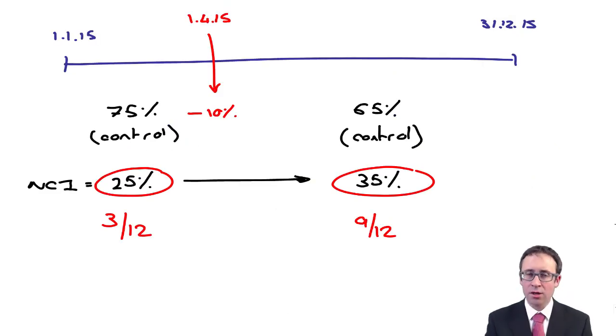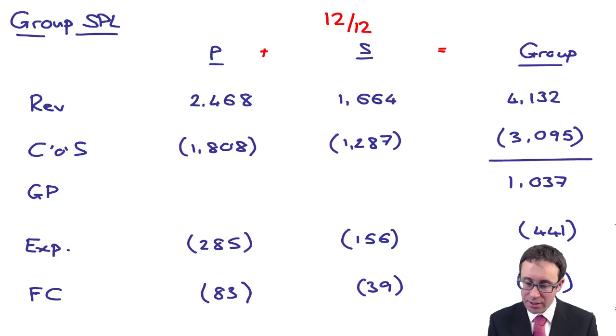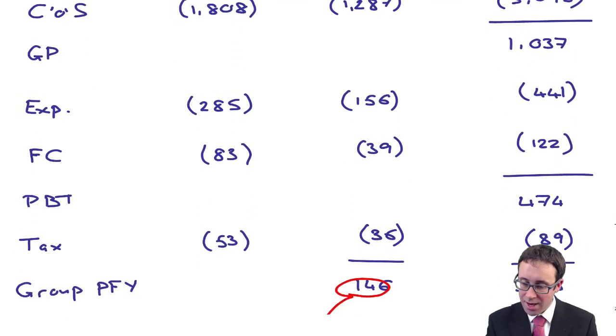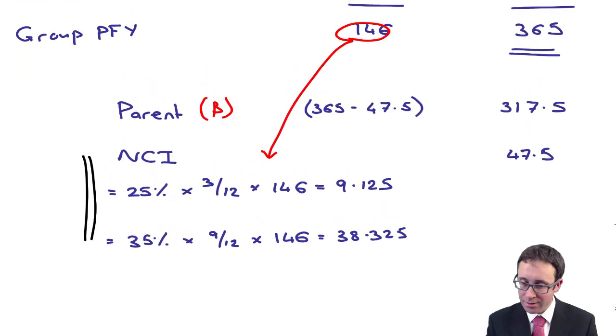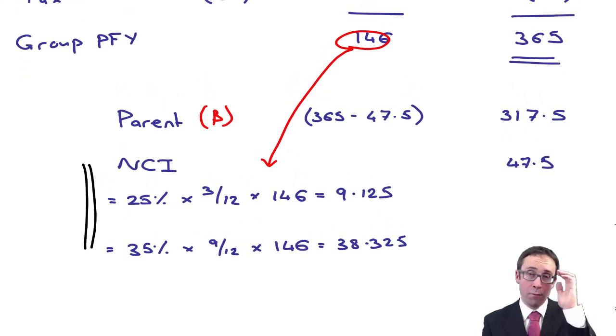Remember here, a change in ownership went from 75% to 65%. We still had control. So we consolidated it for the full year. The issue was all to do with the non-controlling interest and how it moved from 25% to 35%. So when we did our calculations, we consolidated, added it all across, added down, and then the test was being able to split the group profit for the year into the amounts attributable to the parents and the amounts attributable to the non-controlling interest. Hope you found that okay. The exam questions get a lot more challenging, but you can build up to that over time. Keep up the hard work and I'll see you all within the next session.